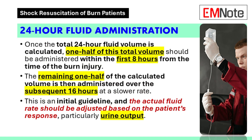For that first 24 hours, we give half of the total calculated fluid volume during the first 8 hours, starting from the time of the burn injury, then the remaining half over the next 16 hours at a slower rate. For example: a 100 kg person with 80% TBSA burns — the calculation is 2 mL × 80 × 100 = 16,000 mL total. That means 8,000 mL in the first 8 hours, which works out to 1,000 mL per hour.